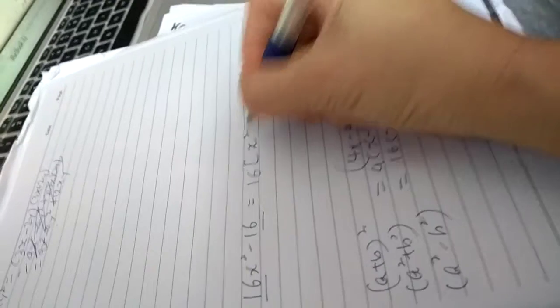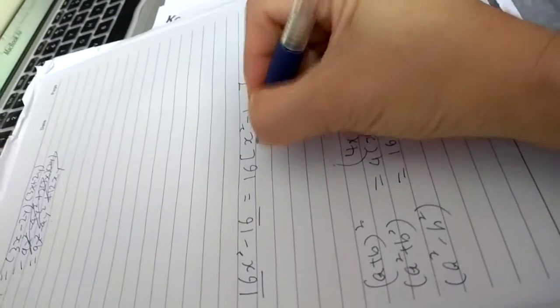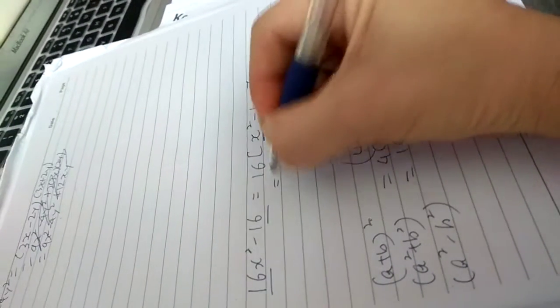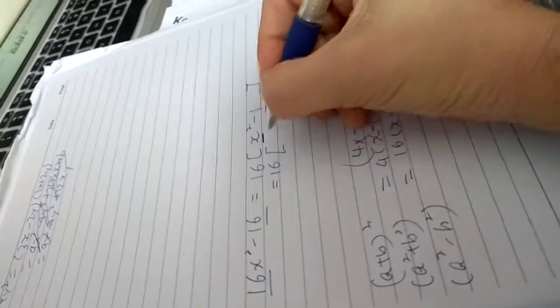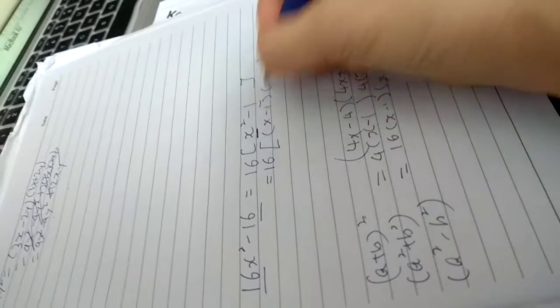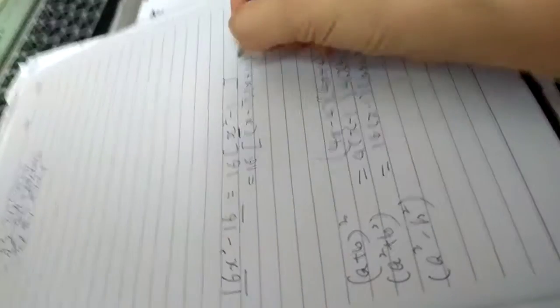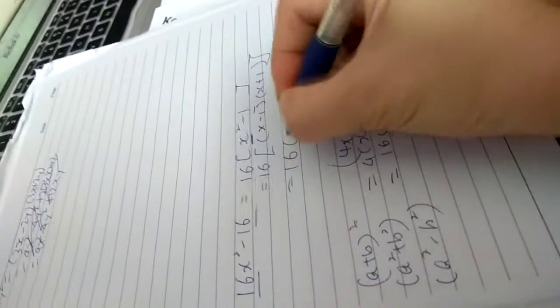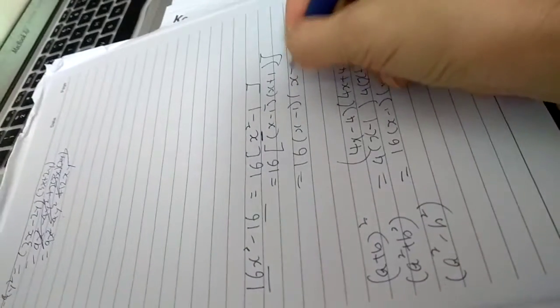x squared minus 1. But you notice that this is a perfect square, so it should be 16, then x squared becomes x minus 1 times x plus 1. Close bracket. Then the final answer is this. Are you okay with that?